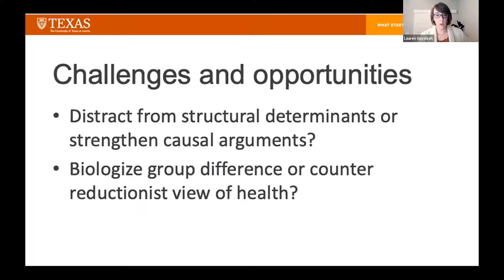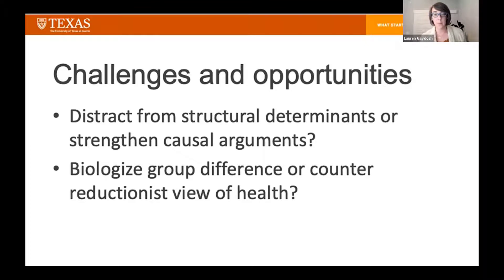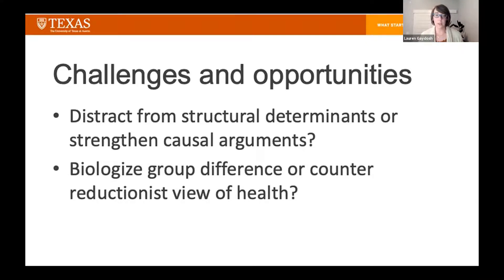Taylor Hargrove and I are also conducting an ancillary study using the biospecimen archive in Add Health, proposing to use dry blood spot markers from wave four to get additional measures of immune and inflammatory response — investigating these same patterns and health disparities. Closing with challenges: there is concern in sociology that pursuing biological mechanisms will distract from structural determinants of health, but this is also an opportunity to strengthen causal arguments by explicating mechanisms through which social environments become biologically embedded. There is also a danger of biologizing group differences, and I encourage active anti-racist and anti-sexist approaches to counter reductionist views of health.